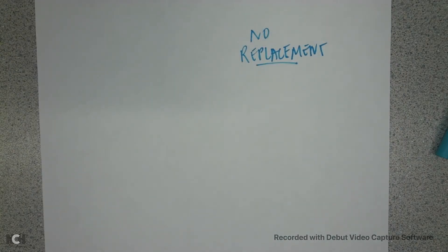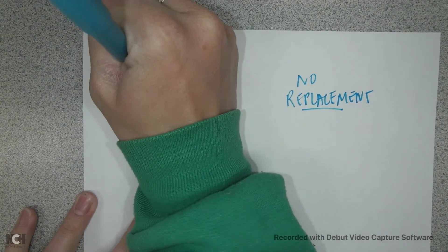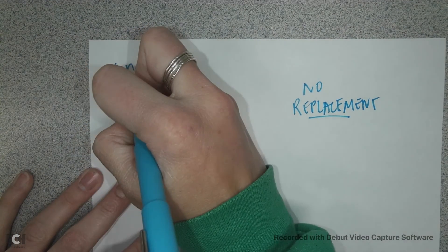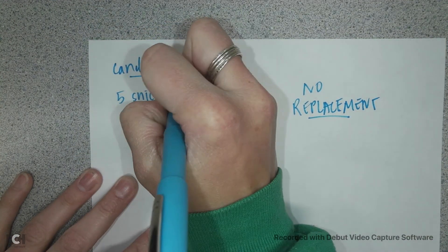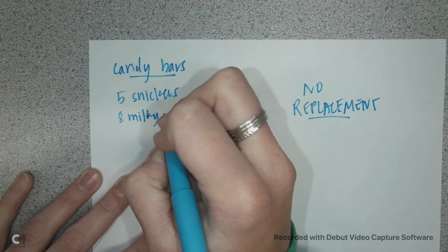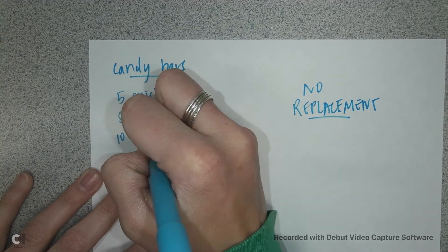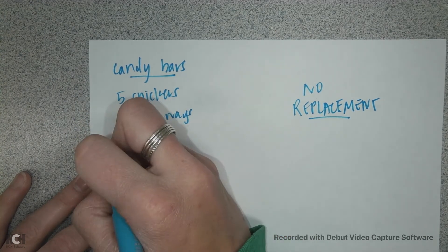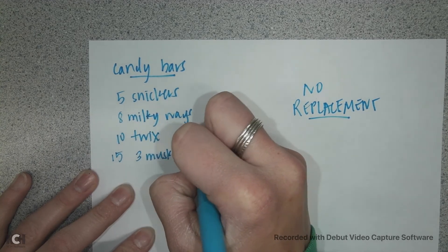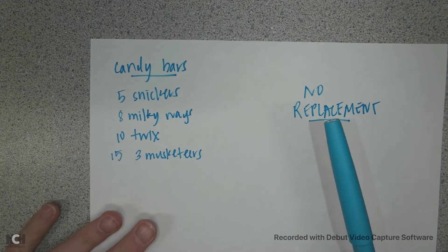Those were all different types of probability with replacement, where you put the Jolly Rancher back. Now we're going to do no-replacement problems. This time we're going to talk about candy bars. I have 5 Snickers, 8 Milky Ways, 10 Twix, and 15 Three Musketeers — all in a bag. This time I am not replacing.